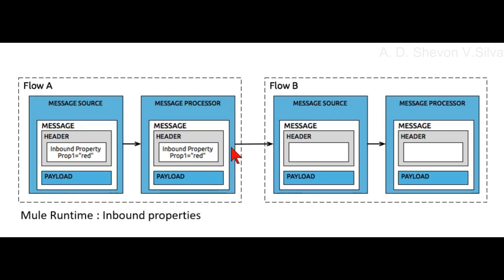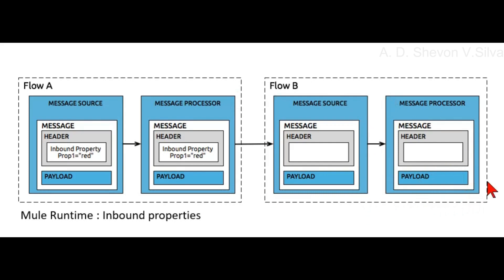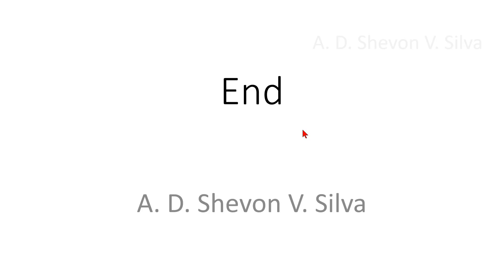The message processor in Flow A is connected to the message source in Flow B. In Flow B, the header and payload are in the message, and the message source is connected to the message processor. Note that the inbound property is no longer present in Flow B.